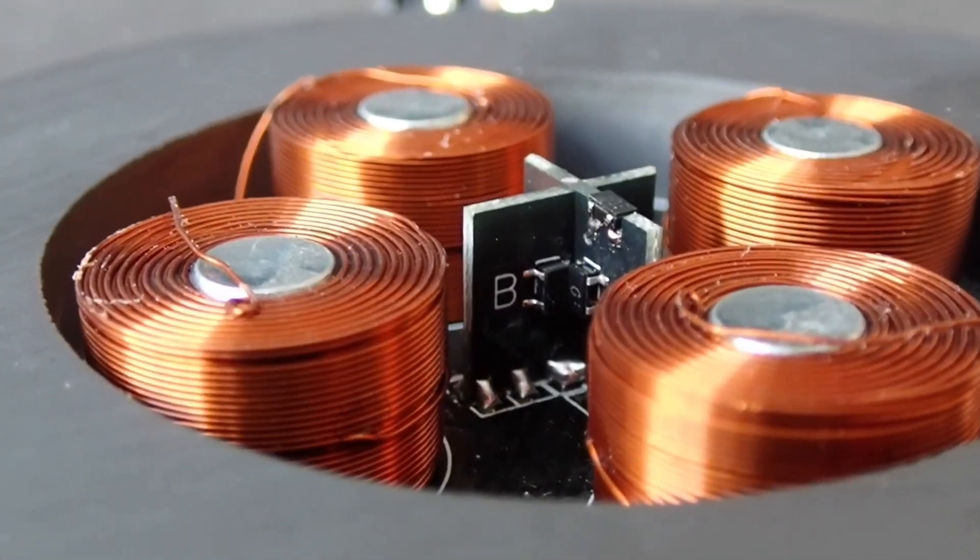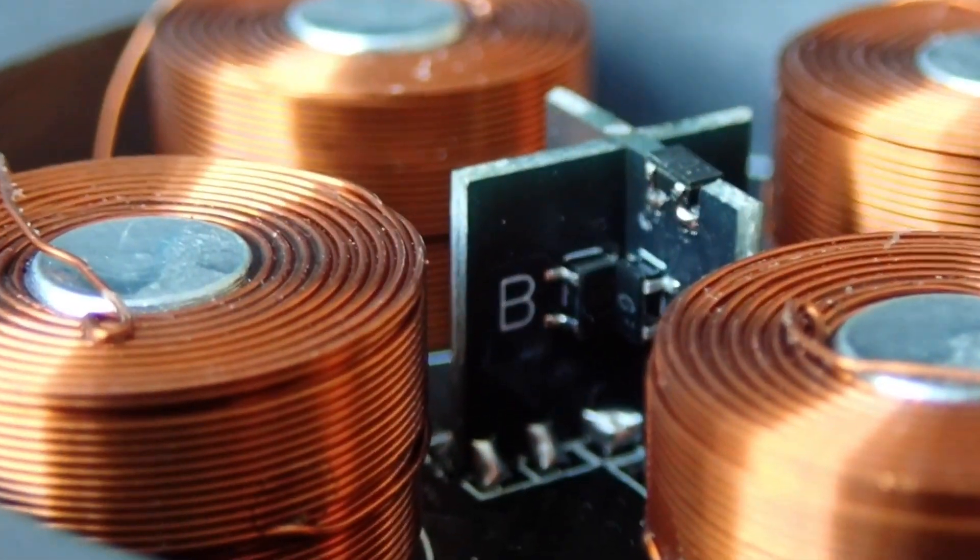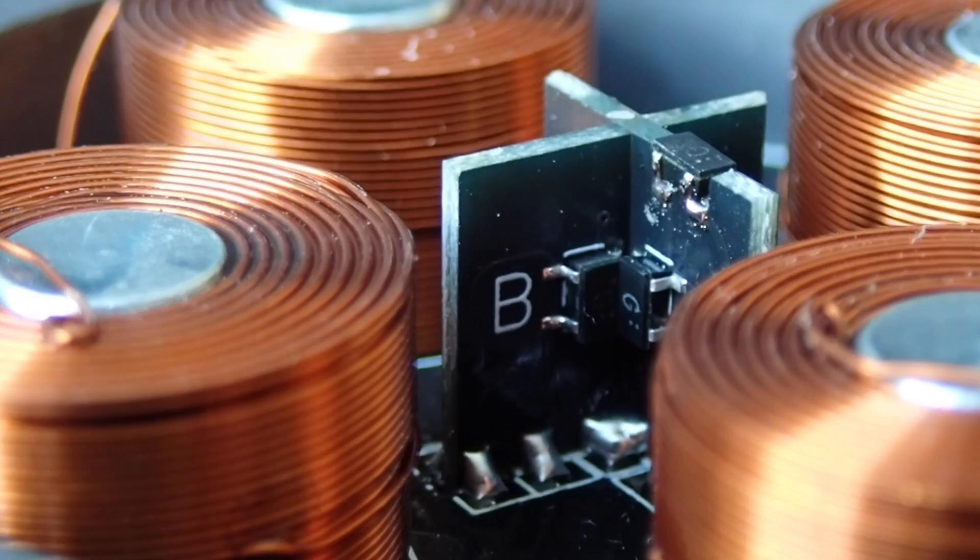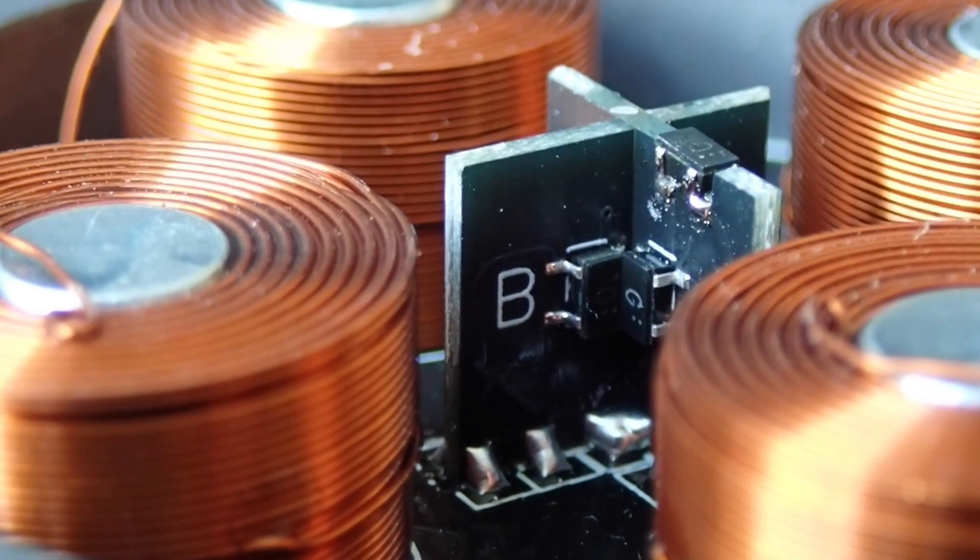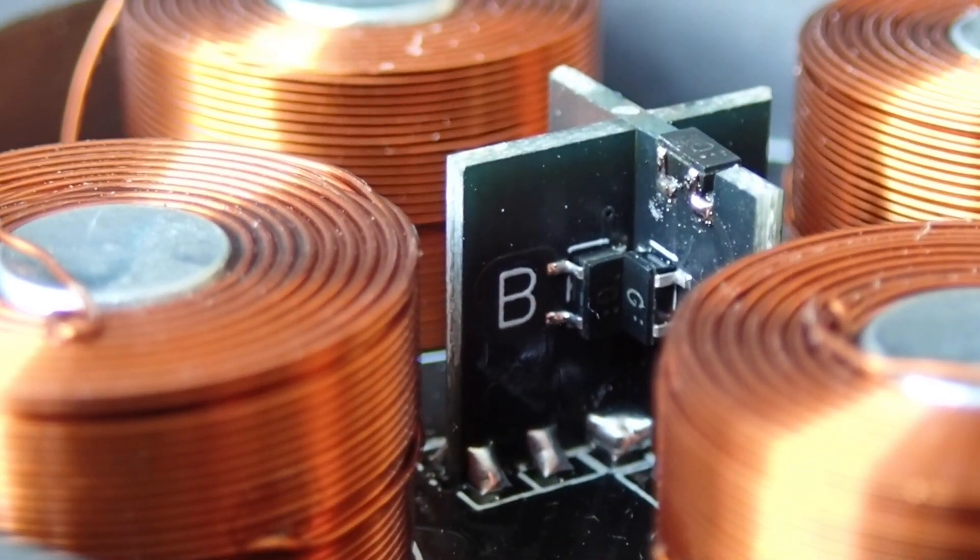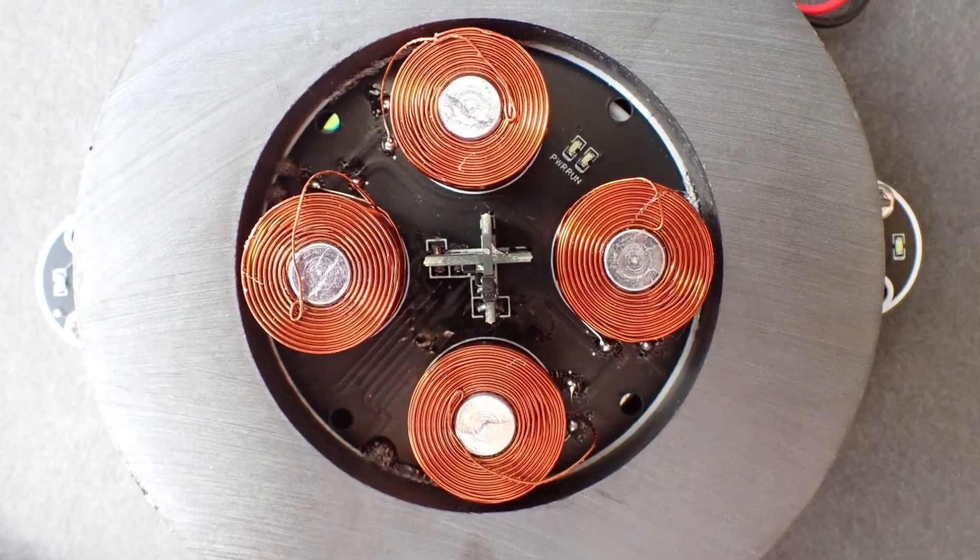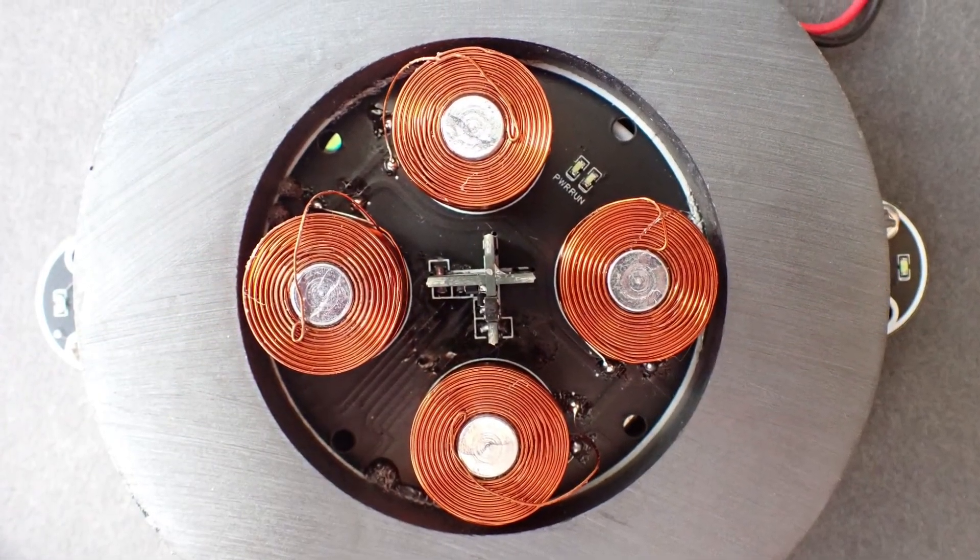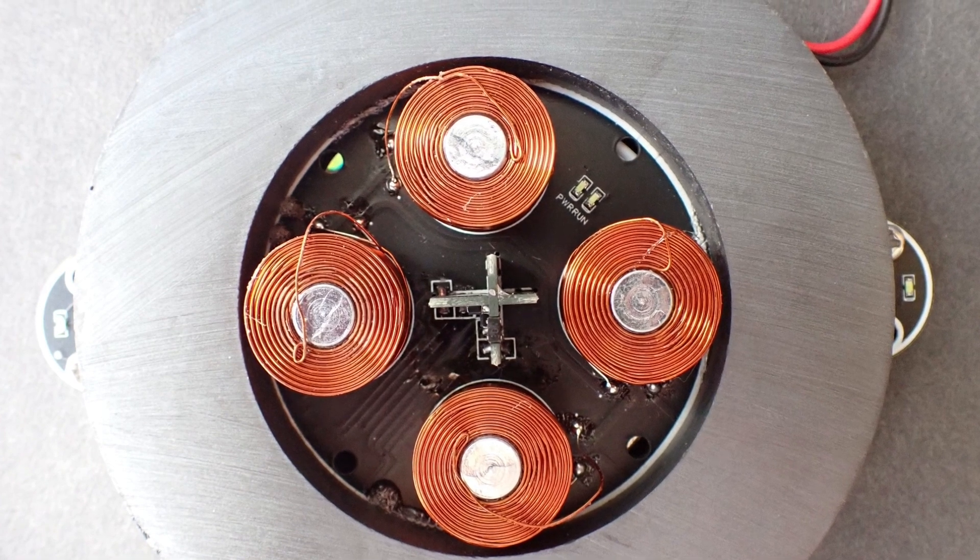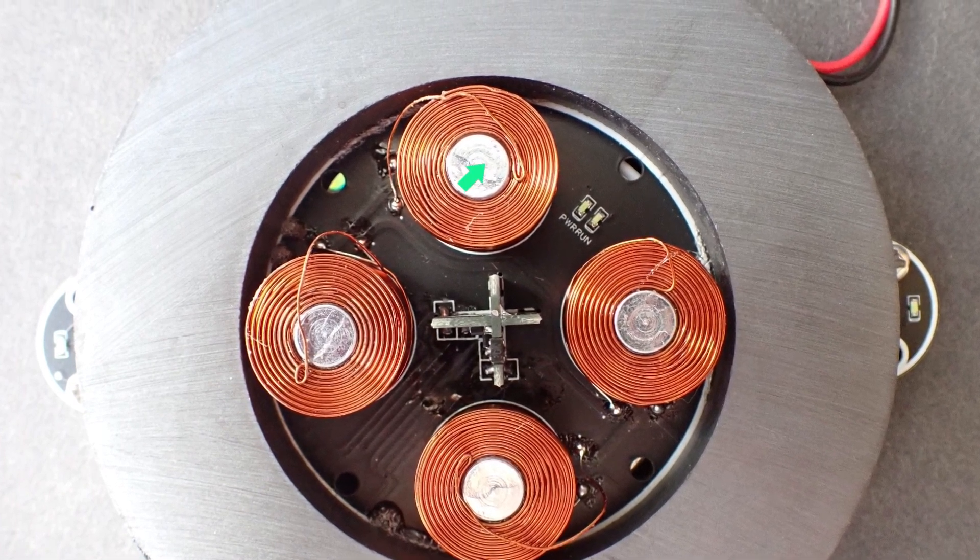The final question then is how does the system know which of the four electromagnets to turn on and when, and that's down to these three Hall effect sensors in the middle, which can each detect the magnetic field in the three dimensions and work out where the magnet is and therefore which electromagnet needs to be turned on.